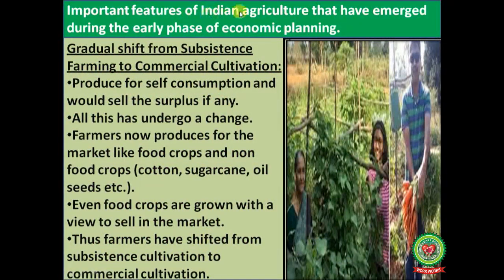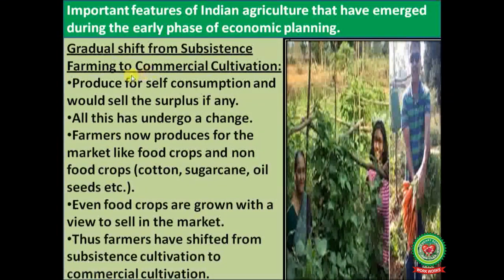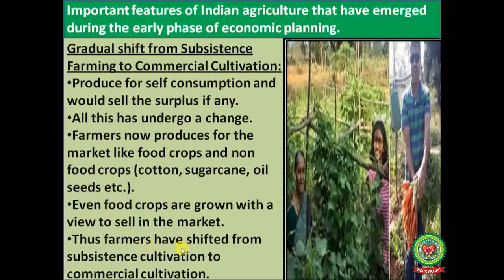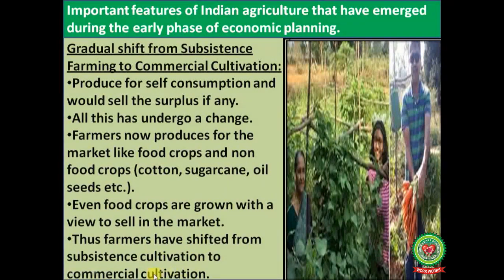Important features of Indian agriculture that emerged during the early phase of economic planning: first is a gradual shift from subsistence farming to commercial cultivation. Farmers who used to produce for self-consumption and sell the surplus underwent a change — farmers now produce for the market, including food crops and non-food crops like cotton, sugarcane, and oilseeds, as well as food crops like wheat, rice, and maize, all grown with a view to sell in the market.